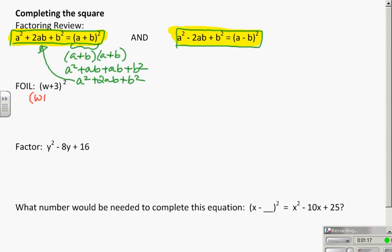So I'm going to have (w + 3) times the quantity (w + 3). First two terms, w², plus outside terms, 3w, plus inside terms, 3w, plus last terms, 3 times 3, which is 3². Now, instead of combining 3w and 3w to get 6w,